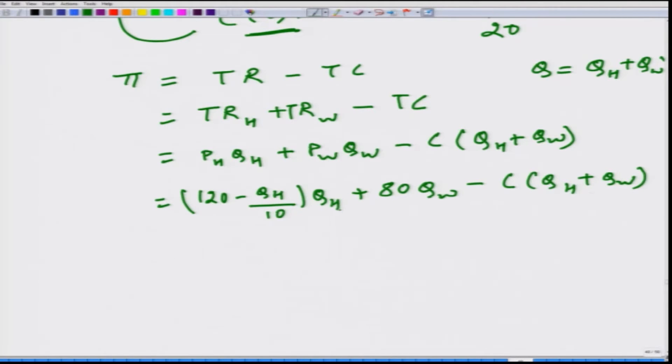Now, this firm has to select the amount of QH as well as of QW. When the firm selects QH and QW, Q gets automatically determined. What would be the first order condition? First to obtain the first order condition this profit has to be differentiated with respect to QH.